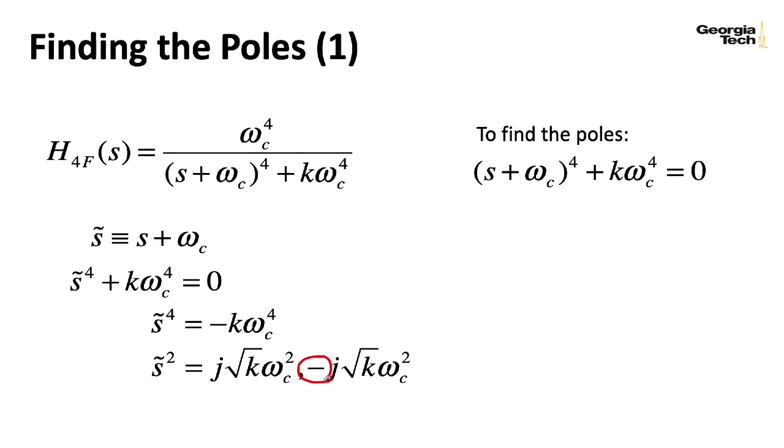So now to go further, let me take the j and the minus j that are complex numbers in rectangular form, and rewrite those in polar form. So I can rewrite j as e to the j pi over 2. That's like a 90 degrees on the complex plane. And the minus j here, I can rewrite that as e to the minus j pi over 2, which is like minus 90 degrees in the complex plane.